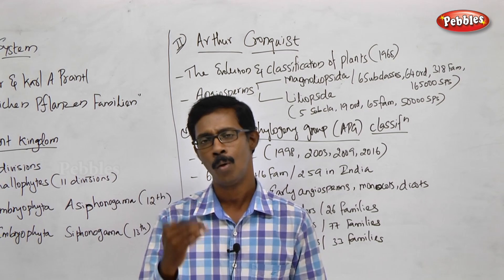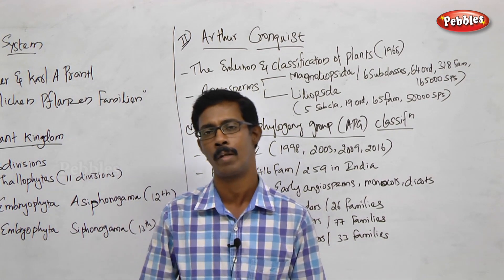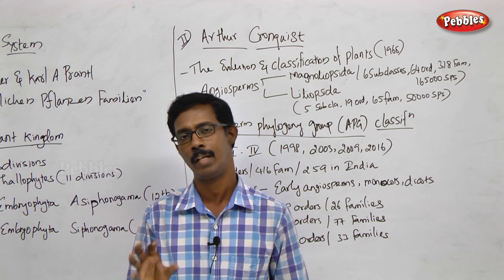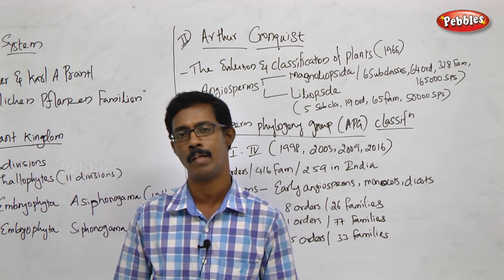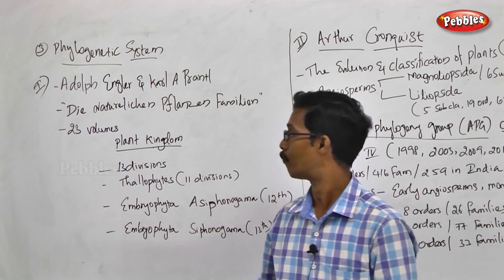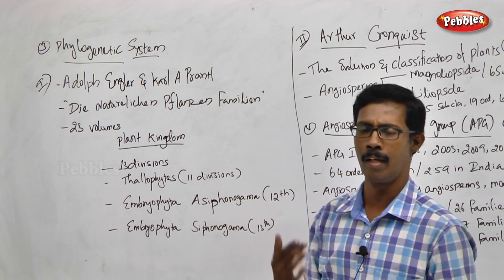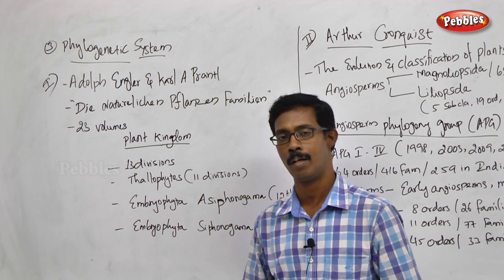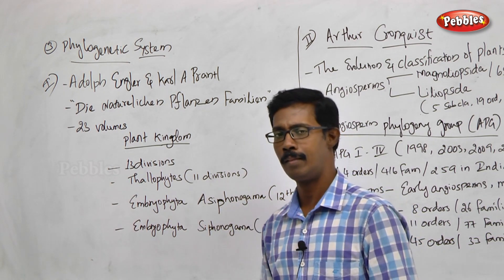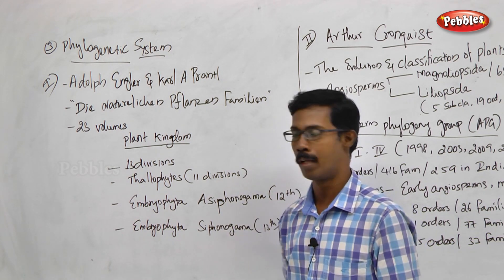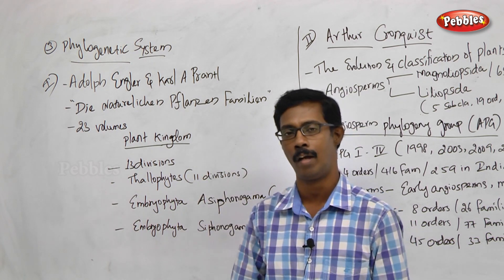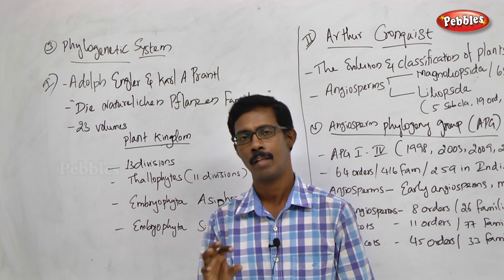The point is that evolutionary history is a factor while determining the position of a particular taxonomic hierarchy. The next system of classification is the phylogenetic system. We are talking about Charles Darwin's identification. Bentham and Hooker are using only morphological characters, but the phylogenetic system goes beyond that.